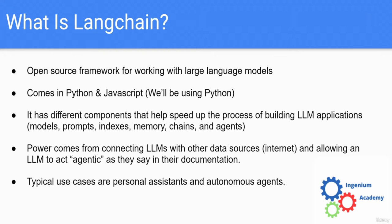A major feature is that LangChain has agents. These agents allow you to connect your large language models to other data sources like the Internet, and that's very powerful. Now you can ask an agent to do something for you, give it some tools, give it an LLM so that it can have a good brain, and it can actually go out and complete a task or answer a question for you using the Internet.